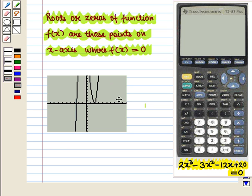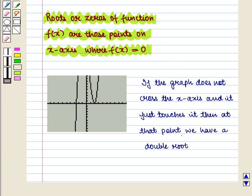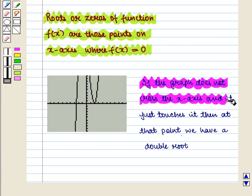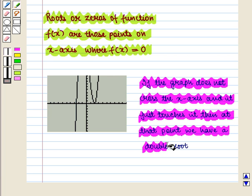Now if we look at the graph we see that it intersects the x-axis at one point and at the other point the curve touches the x-axis. We also know that if the graph does not cross the x-axis and it just touches it, then at that point we have a double root. So at this point of the curve we will have double roots. So let us first find this root of the function.